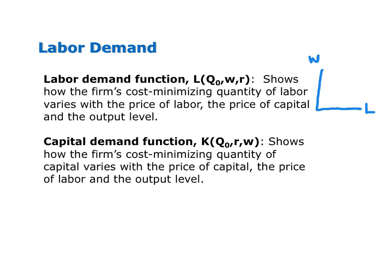The capital demand function is a mathematical expression that shows how a firm's cost minimizing amount of capital varies with the price of capital, the price of labor, and the output level. Graphically, if we draw a capital demand curve we are looking at the relationship just between the cost minimizing amount of capital and the price of capital, holding the wage rate and output level constant.